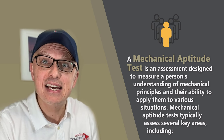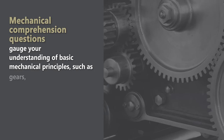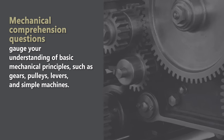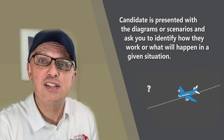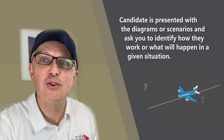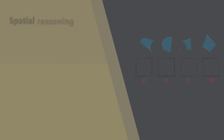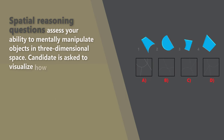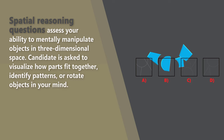Mechanical aptitude tests typically assess several key areas. One area is mechanical comprehension questions, which gauge your understanding of basic mechanical principles such as gears, pulleys, levers, and simple machines. Candidates are presented with a diagram or scenario and asked to identify how they work or what will happen in a given situation. Spatial reasoning questions assess your ability to mentally manipulate objects in three-dimensional space.